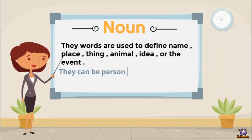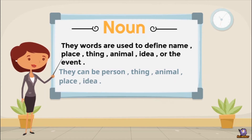What are the examples of nouns? Like a person — name of a person: Jerry, Jennifer. A thing can be a bat, ball, table, chair. An animal can be a dog, cat, lion. A place can be Agra, Delhi, Taj Mahal. An idea can be happiness, sadness, and so on. So these are nouns.